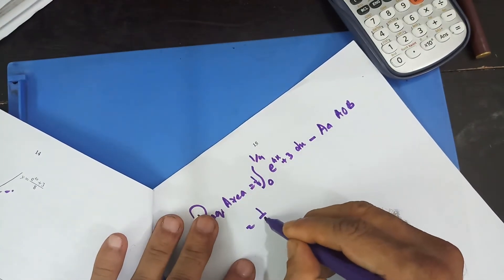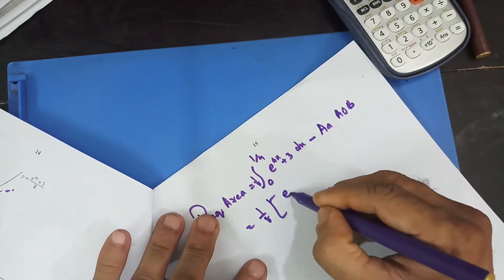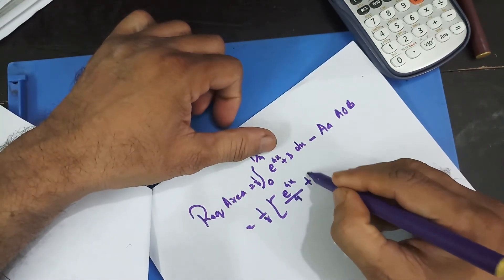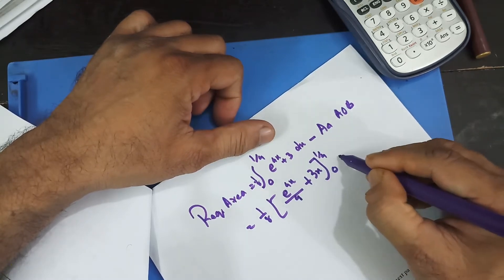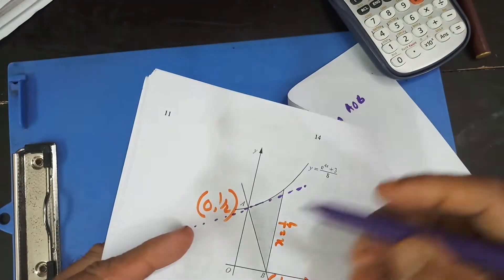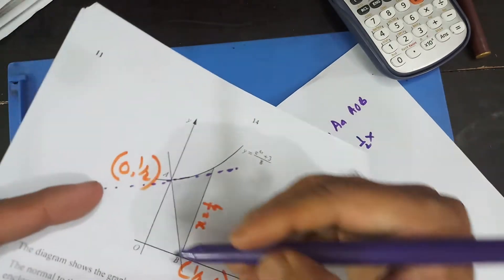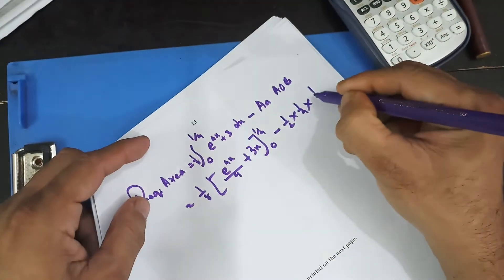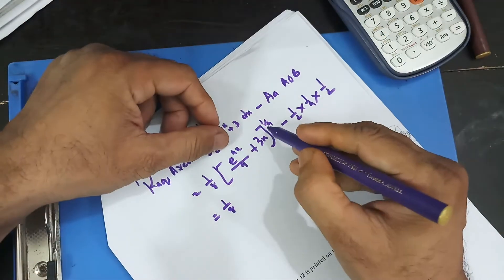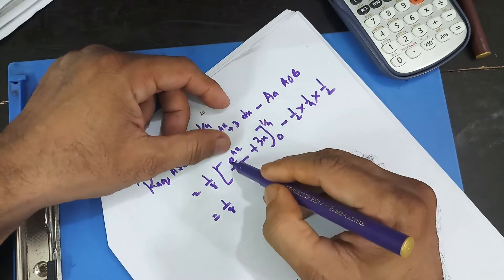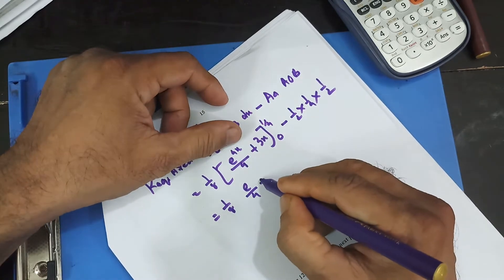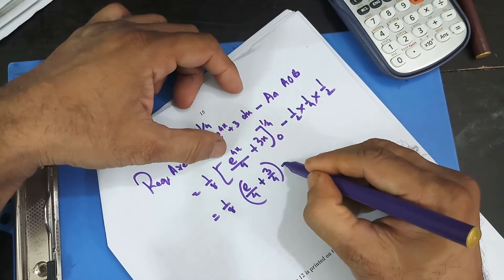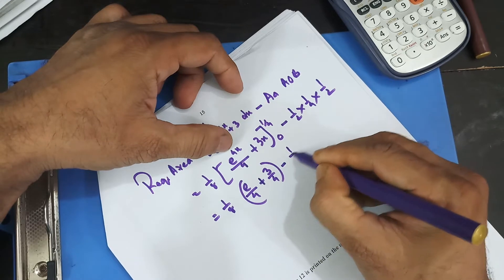So that's (1/8)[e^(4x)/4 + 3x] from 0 to 1/4, minus the triangle area which is (1/2)·(1/4)·(1/2) = 1/16. At x = 1/4: the 4s cancel giving e/4 + 3/4. At x = 0: 1/4. So (1/8)[(e/4 + 3/4) − 1/4] = (1/8)[e/4 + 2/4] = (1/8)·(e + 2)/4 = (e + 2)/32.